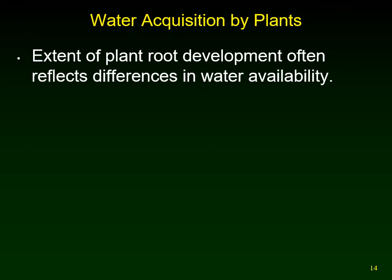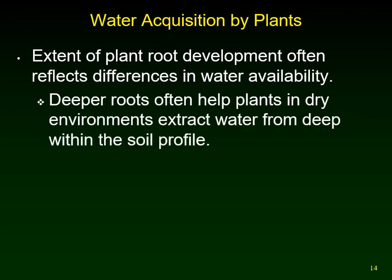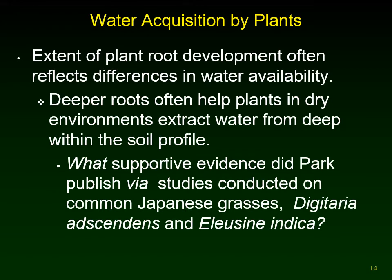Most of the growth of desert plants is underground searching for water, because there's plenty of sunlight for photosynthesis — the plant grows in the direction of what it's limited by, which is water. It could be 90 percent underground, whereas in a boreal coniferous forest only about 25 percent of the plant is underground. Deeper roots help plants in dry environments extract water from deep within the soil profile.